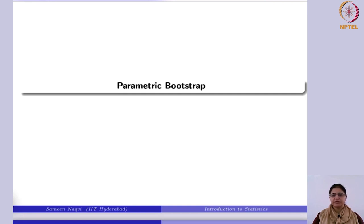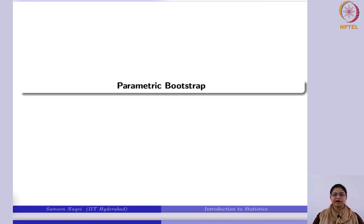Now we will move on to the parametric case, where we consider that the data might be coming from some other known distribution, some other parametric distribution — not the normal. It is not as in the previous situation where you had no idea about the population. Here, at least you have an idea about the population from which the sample is being taken.